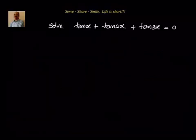Hello friends, welcome back, hearty welcome to you. Let us try to solve this problem from trigonometric equations. We have been given that tan x plus tan 2x plus tan 3x equal to 0. Now if you directly try to substitute the formulas for tan 2x and tan 3x it will be lengthy.